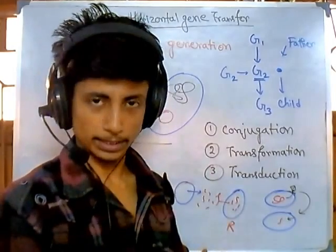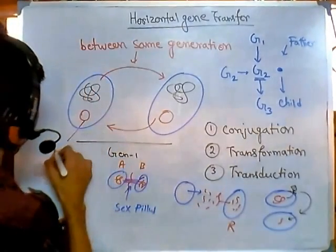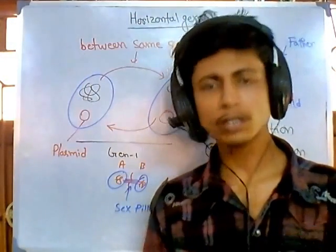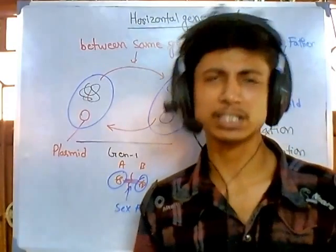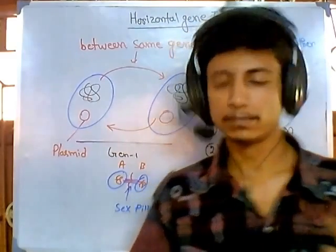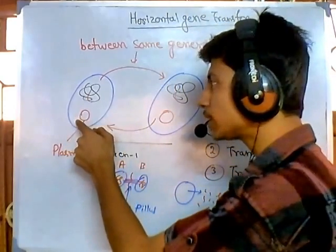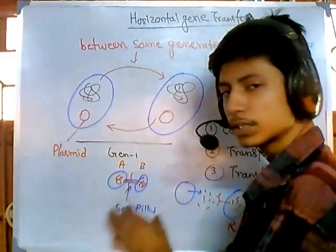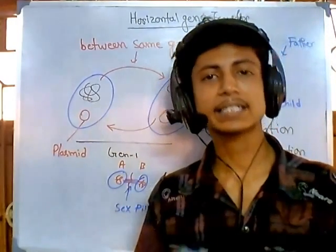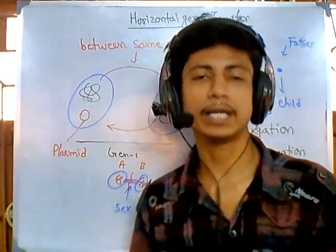Sometimes bacteria transfer not only chromosomal gene segments but also plasmid segments. These plasmids carry vital gene information — not just information for cell structure and shape, but vital sections like antibiotic resistance genes. If a bacterium has antibiotic resistance genes in a plasmid and can transfer that plasmid via transformation or transduction to other bacteria of the same generation, it successfully spreads that resistance.